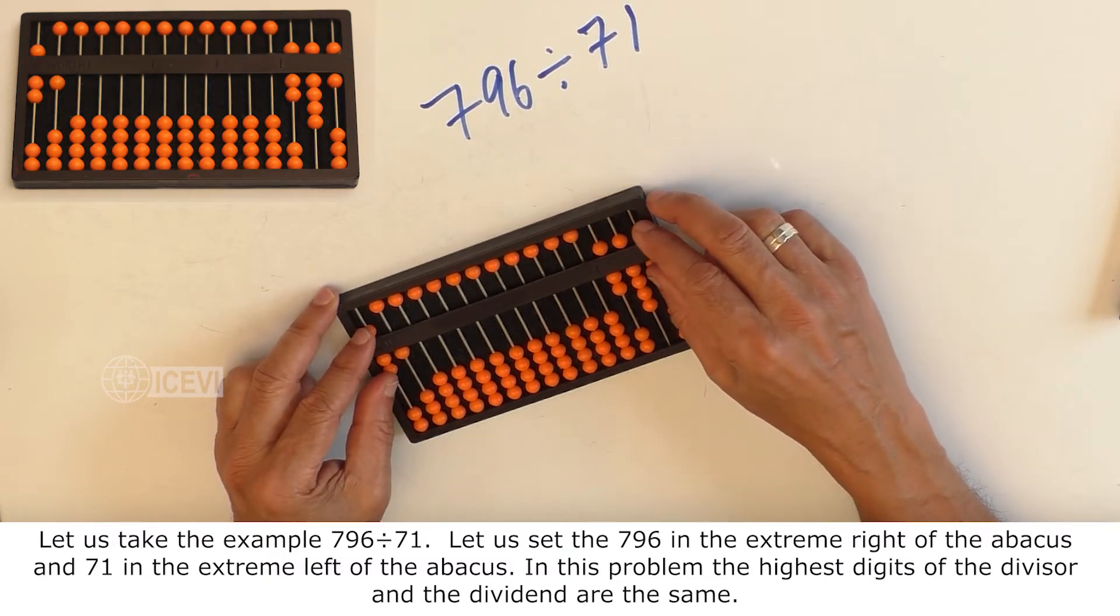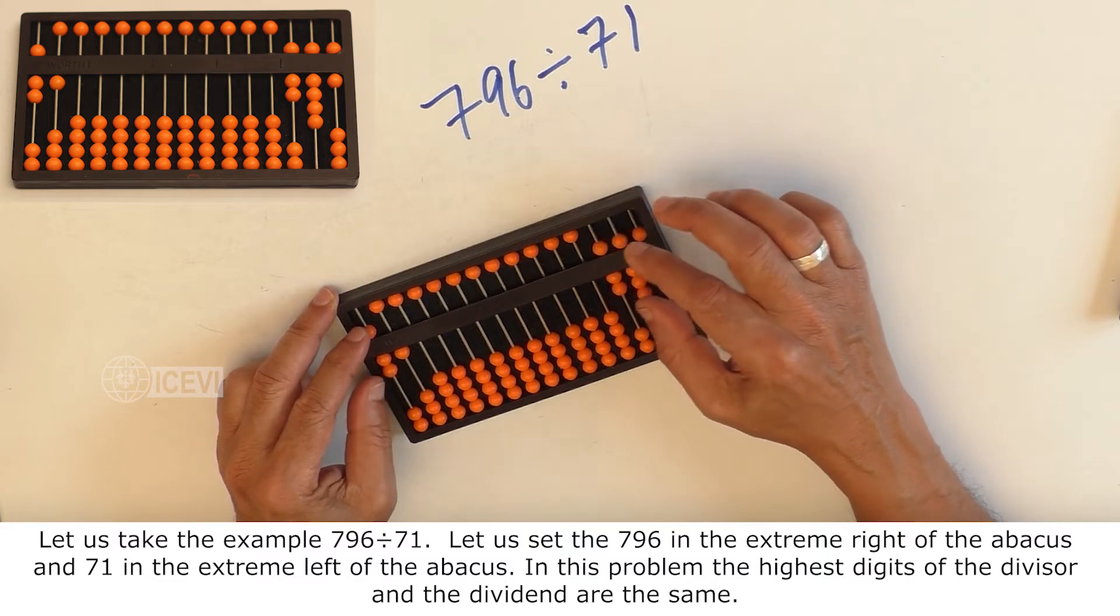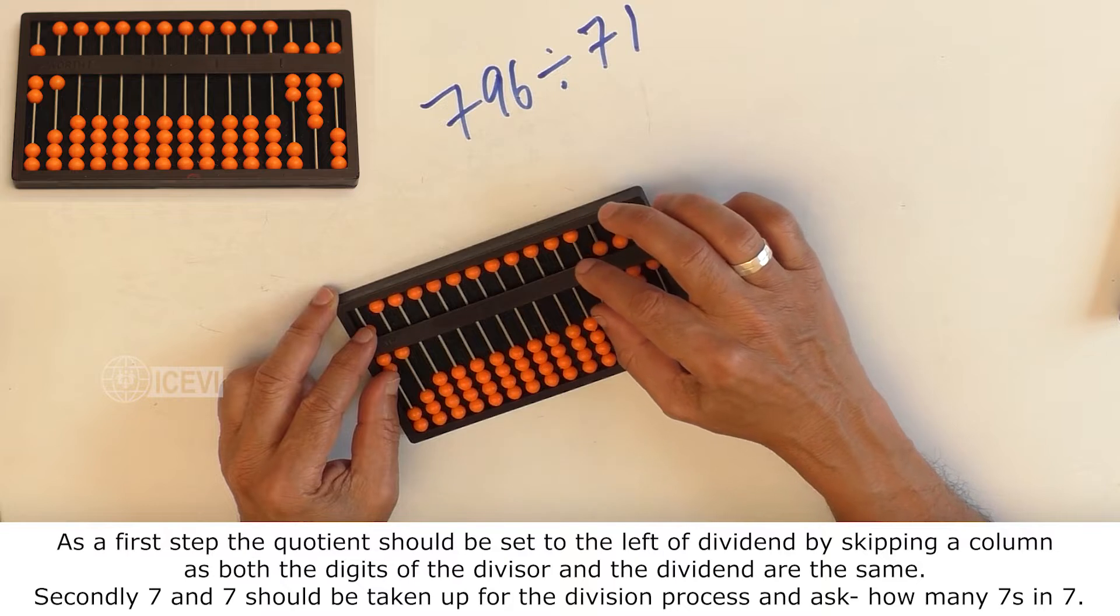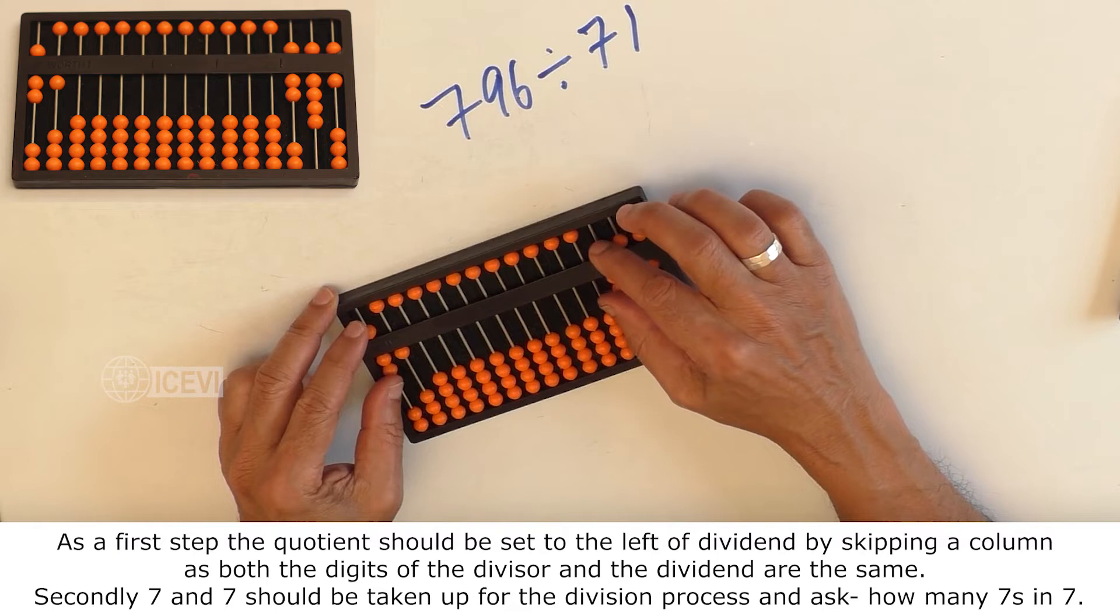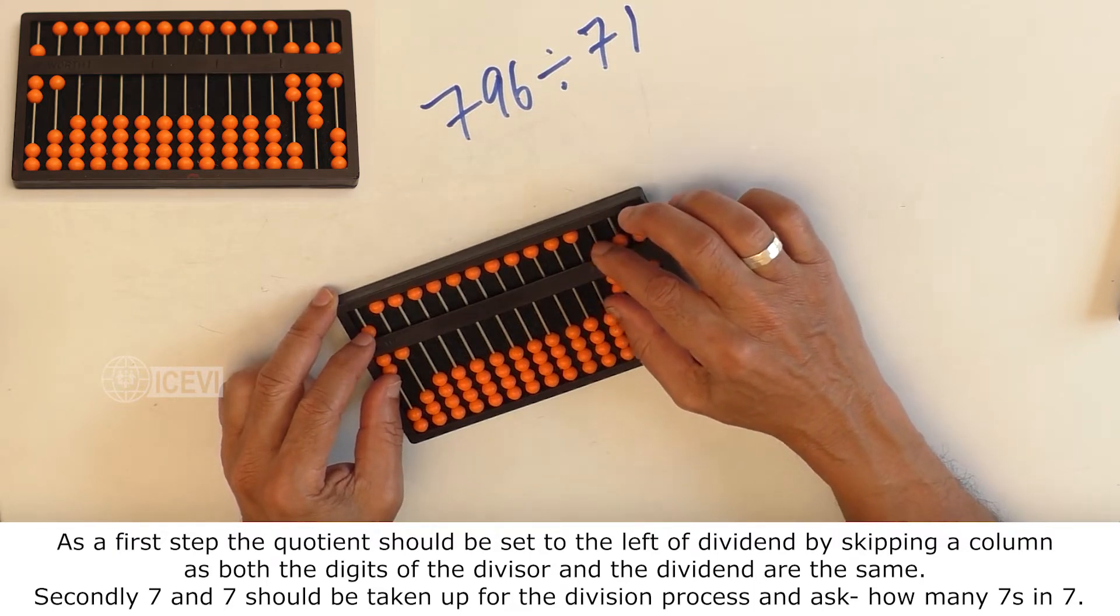In this problem, the highest digits of the divisor and dividend are the same. As a first step, the quotient should be set to the left of dividend by skipping a column, as both the digits of the divisor and the dividend are the same.